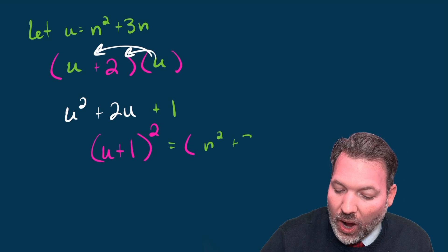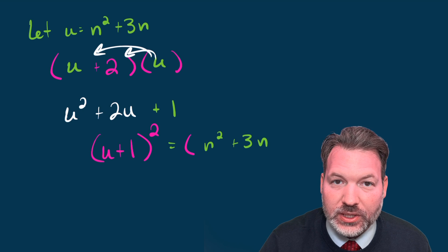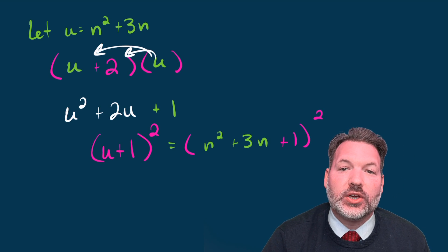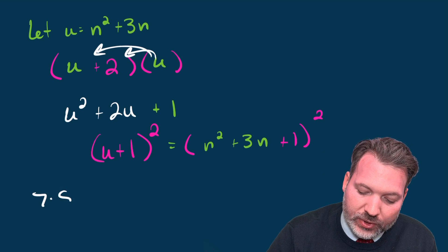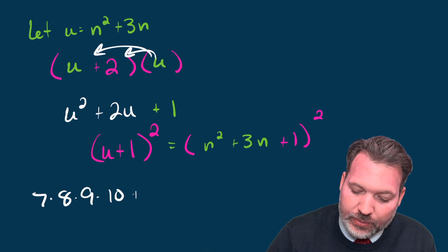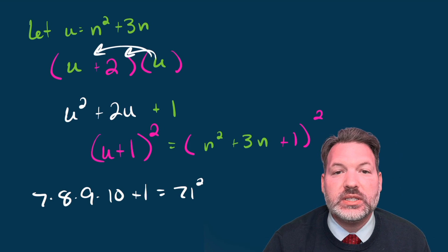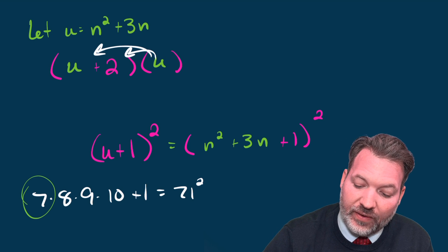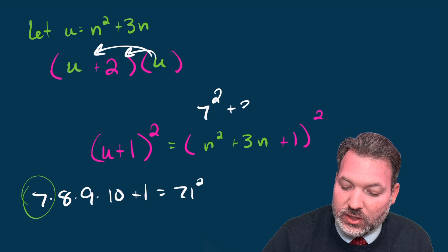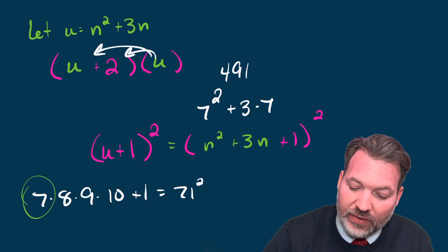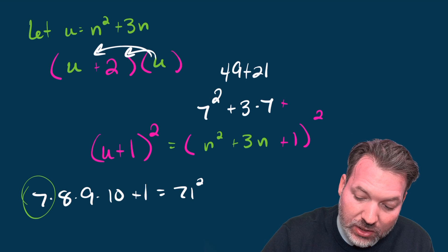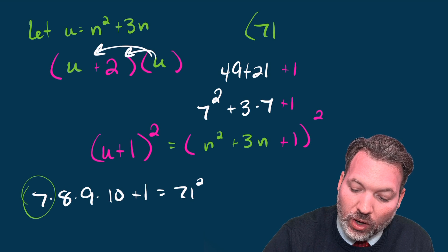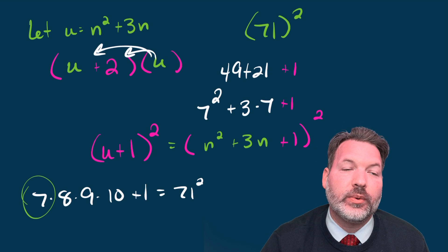And if we undo our substitution from earlier, not only can we see why that product of four consecutive integers plus one is always a perfect square, we can also now say exactly what number it's going to be the square of. Recall with our example, seven times eight times nine times 10 plus one, we said this was equal to 71 squared. Well, if we take n to be that first integer from before seven, and we plug it into this expression, seven squared is 49 plus three times seven is 21, plus the one that we know we have to add to that makes this whole thing equal to 71 squared, that same 5041 that we got before.